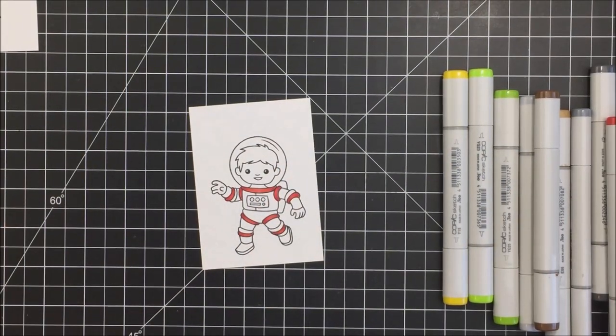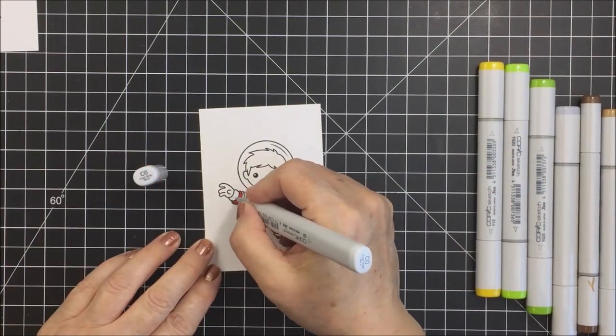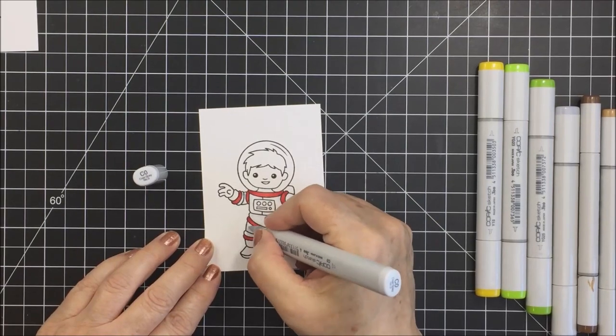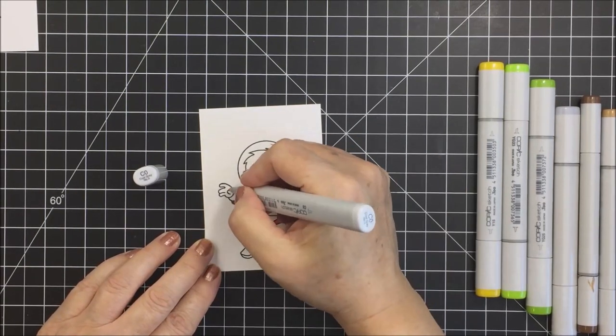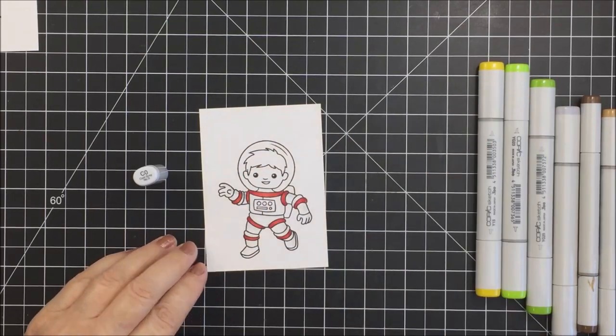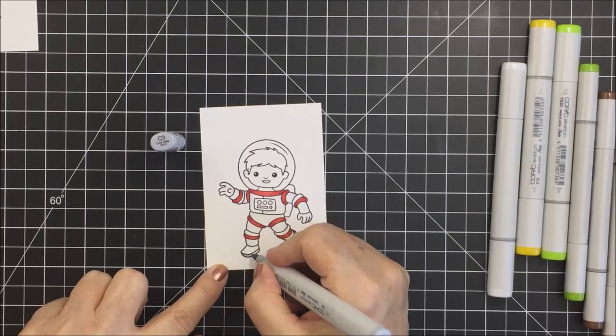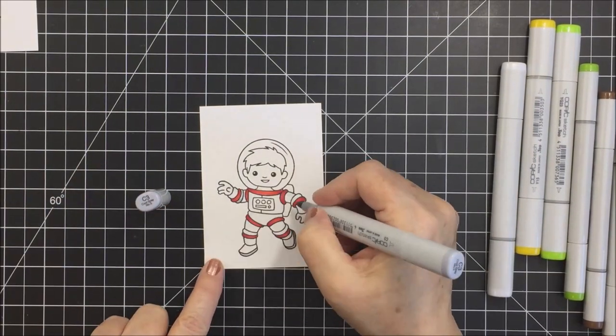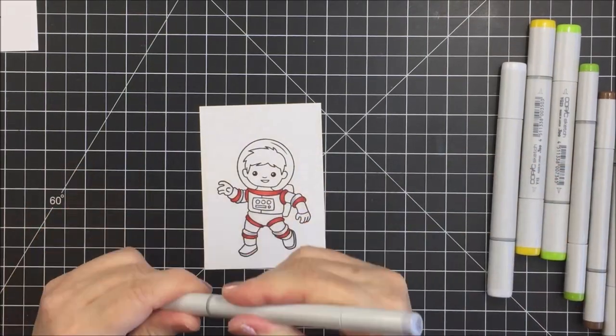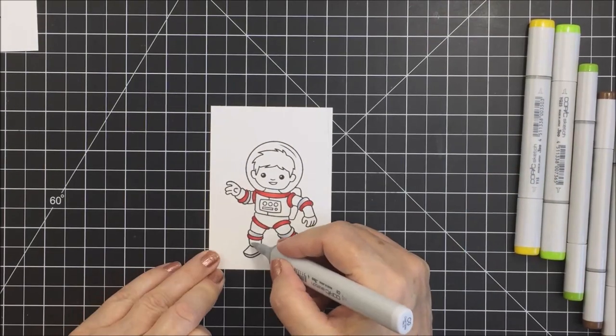So that's all I'm going to do for those red areas on my little astronaut. This coloring does not take long with the Copic markers. A lot of the suit I just left white, but I wanted to kind of add a little bit of dimension to the white areas by adding a little bit of gray. So I'm going to use my C0 and my C3 to add a little bit of dimension to the gray areas where I want the suit to actually be white.